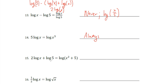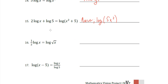Okay, 2 log x plus log 5 equals log x squared plus 5. This one is never true. What you should actually end up with is log of 5x squared. The x squared comes from the 2 log x, the 5 comes from this log 5. Alright. 1 half log x equals log square root of x. Always true. That was a funky looking y there. Always true.